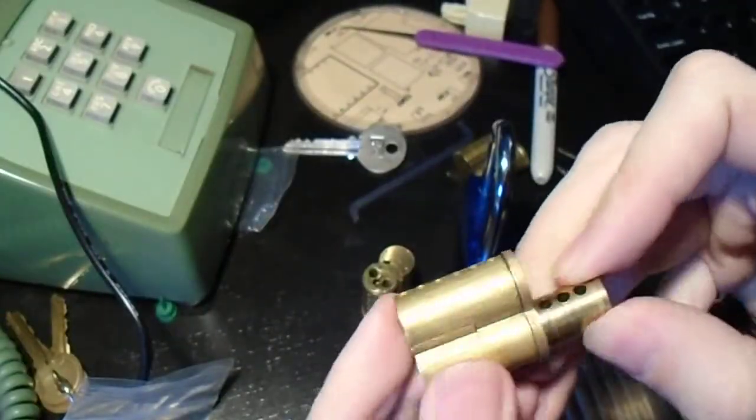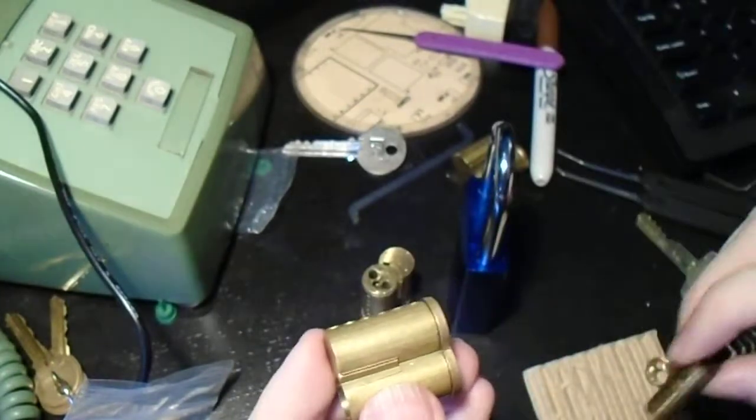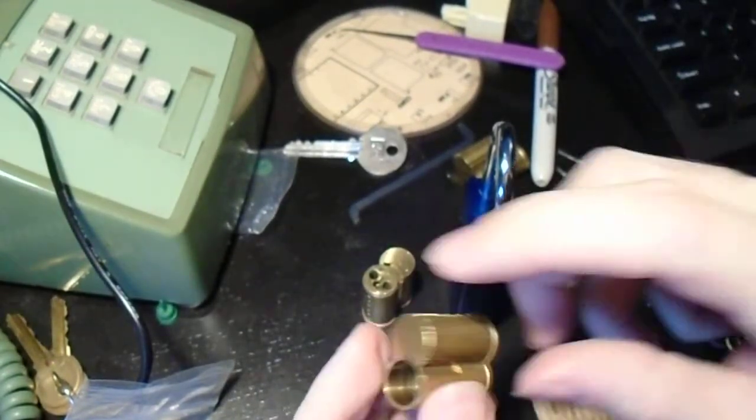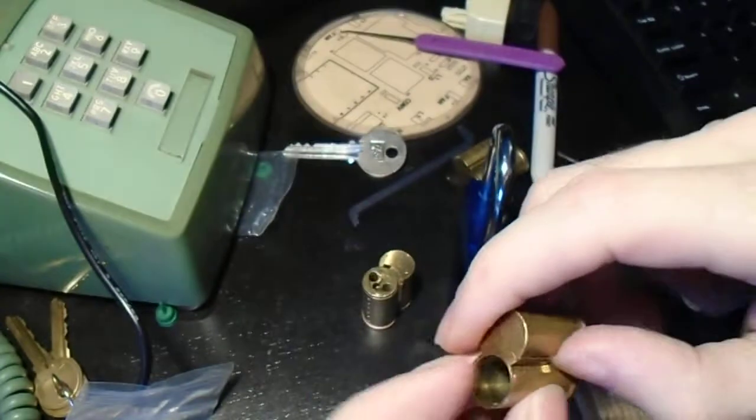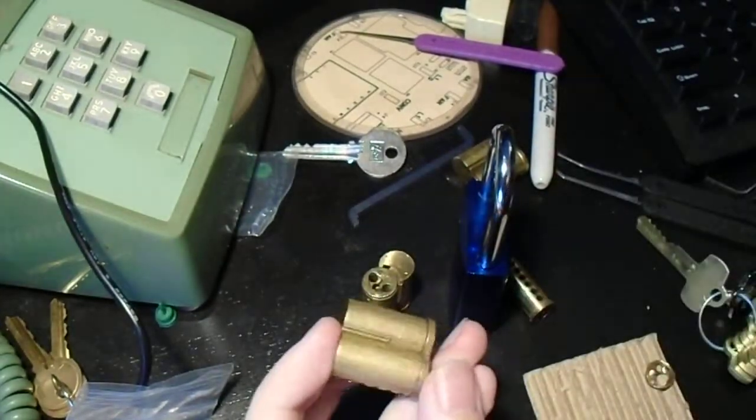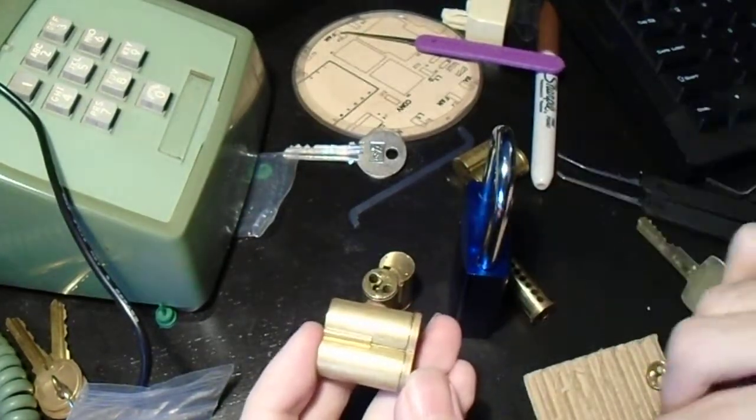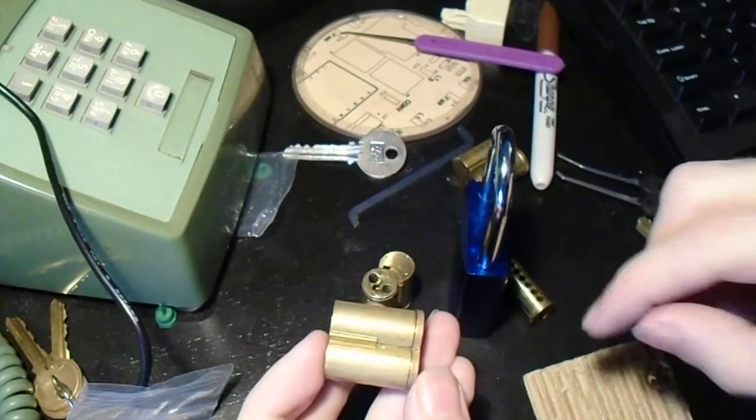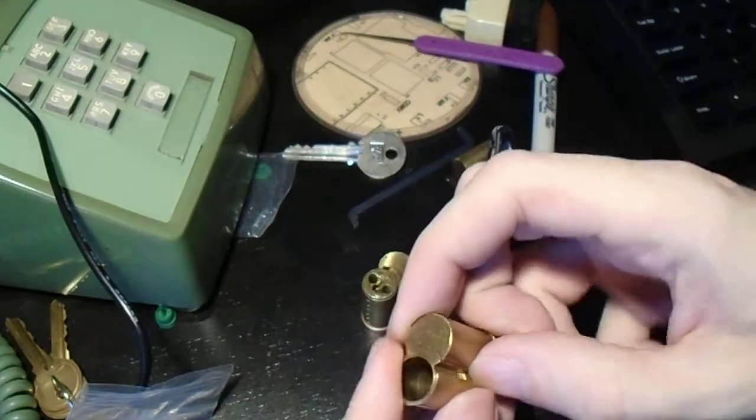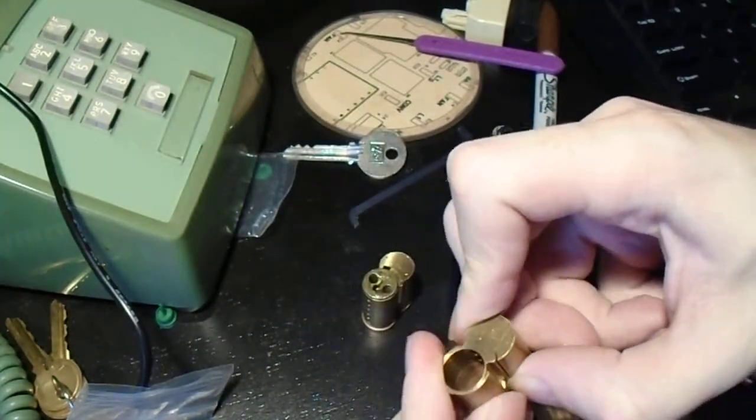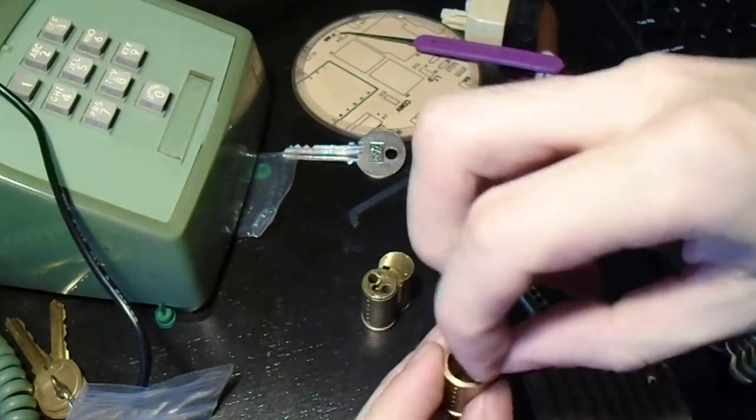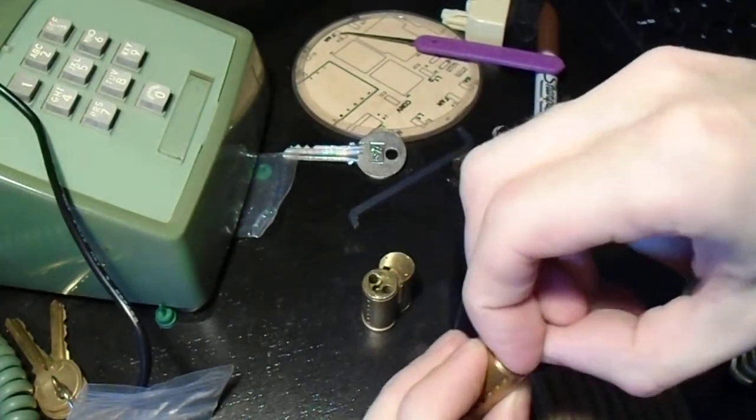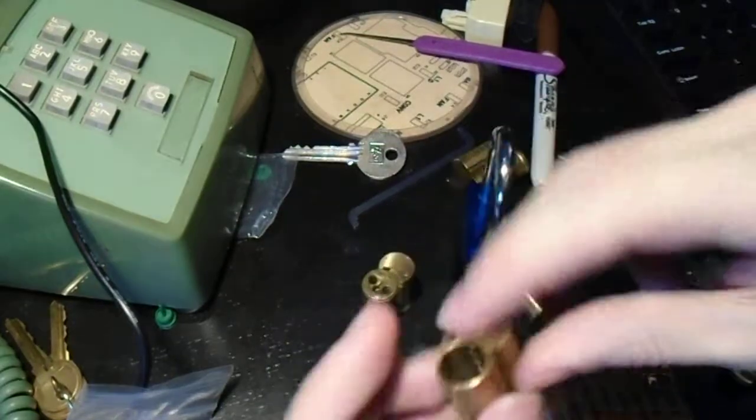And that's why you have those three different pins. One allows you to rotate just the plug. The middle one makes the difference between... you have the key pins, the control pins, and the driver or buildup pins. And that creates two different shear lines, one which will match up with the sleeve, and one which will match up with the plug.